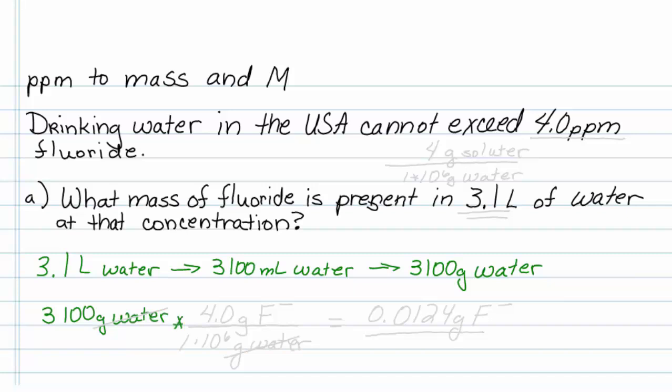The secret to doing this problem is to recognize what parts per million is. When we are told that something is 4 parts per million, we are being told that it is 4 grams of solute per 1 million grams,